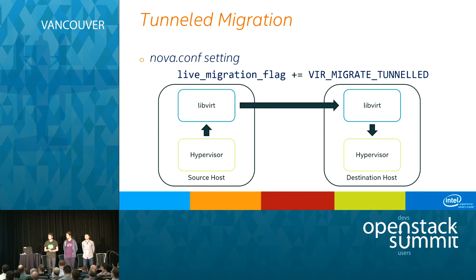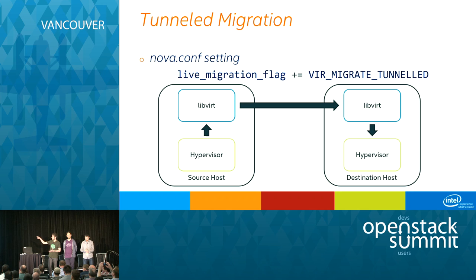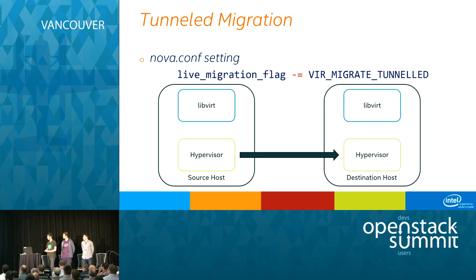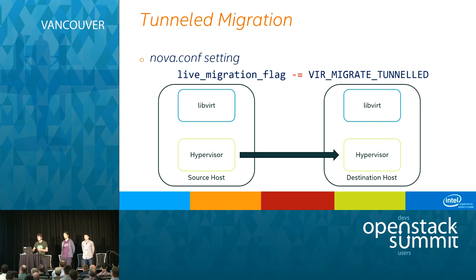We also noticed that the VIR_MIGRATE_TUNNEL flag is on by default. In tunneled mode, data flows from the hypervisor to libvirt, through the network to libvirt on the destination host, and then back to the hypervisor. When we disable this flag, hypervisors talk to each other directly. We found that disabling this flag increases live migration performance approximately four times, though the improvement may depend on hardware and network capabilities. The tradeoff is losing encryption when hypervisors communicate directly.